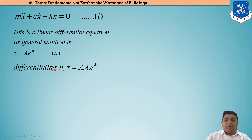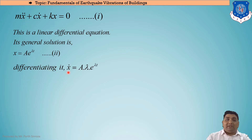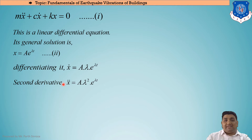We need three forms: x, ẋ, and ẍ. Differentiating x = Ae^(λt) with respect to time gives ẋ = Aλe^(λt). Differentiating again gives the acceleration ẍ = Aλ²e^(λt). These are the three expressions we will substitute into our equation of motion.